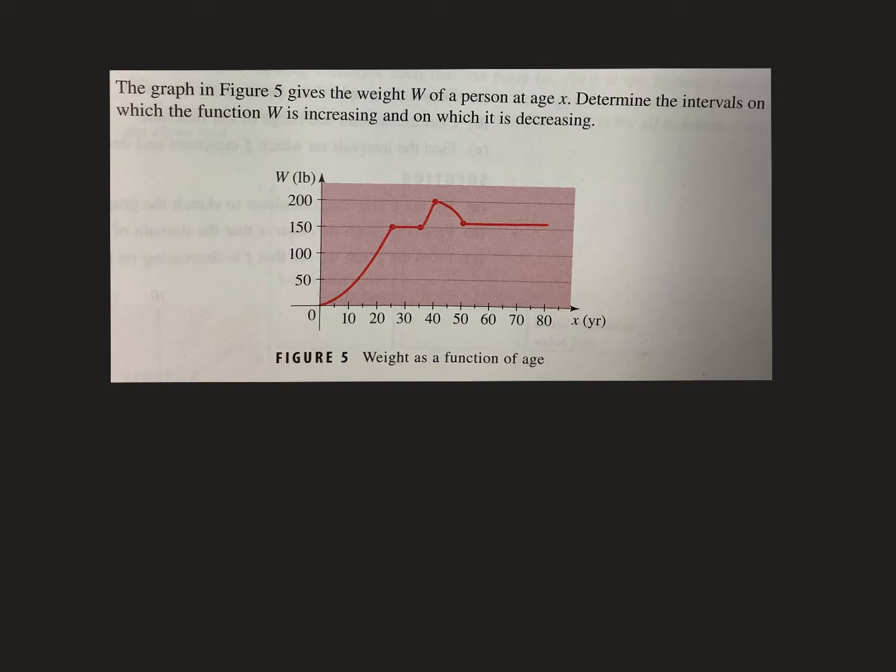Here's a good one right here. It says the graph in figure 5 gives the weight of a person at age x. Determine intervals on which the weight is increasing and which is decreasing. Okay, so basically when you're born, believe it or not, you start gaining weight. So the first part of the graph, from 0 all the way, let's see where it goes here. I'm trying to make my marker work.